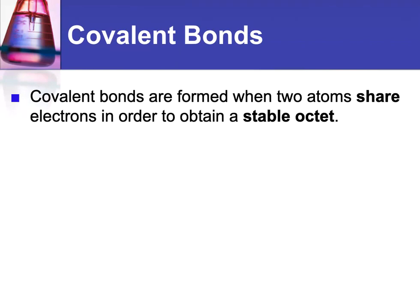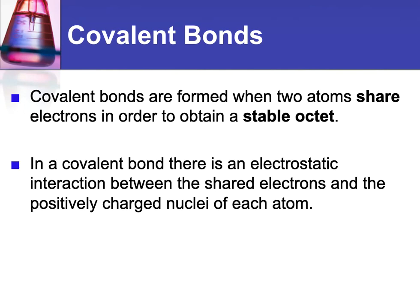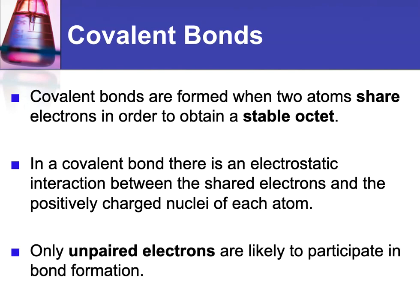A covalent bond forms when two atoms share electrons in order to obtain a stable octet. And in that bond, there ends up being an electrostatic attraction between those shared electrons, which exists between the two nuclei. So the shared electrons are being attracted to both nuclei, and that's what holds the bond together. When you're forming covalent bonds, you're only likely to use unpaired electrons to form the initial bond.